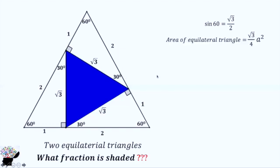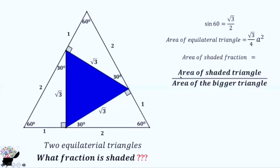The area of an equilateral triangle is √3/4 times a squared, where a is the side of the equilateral triangle.